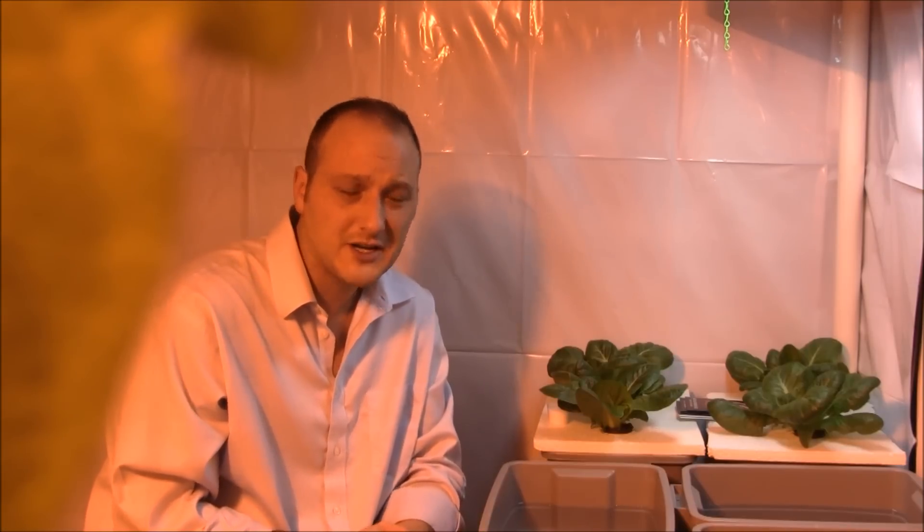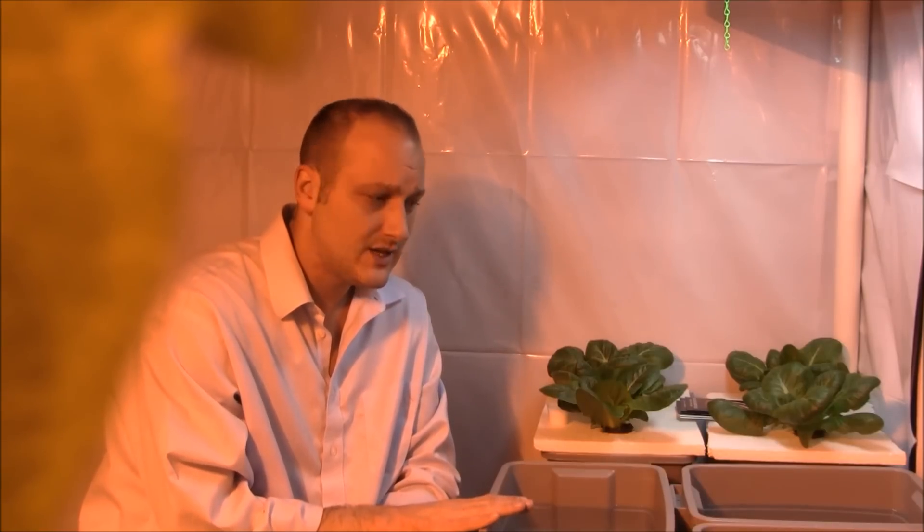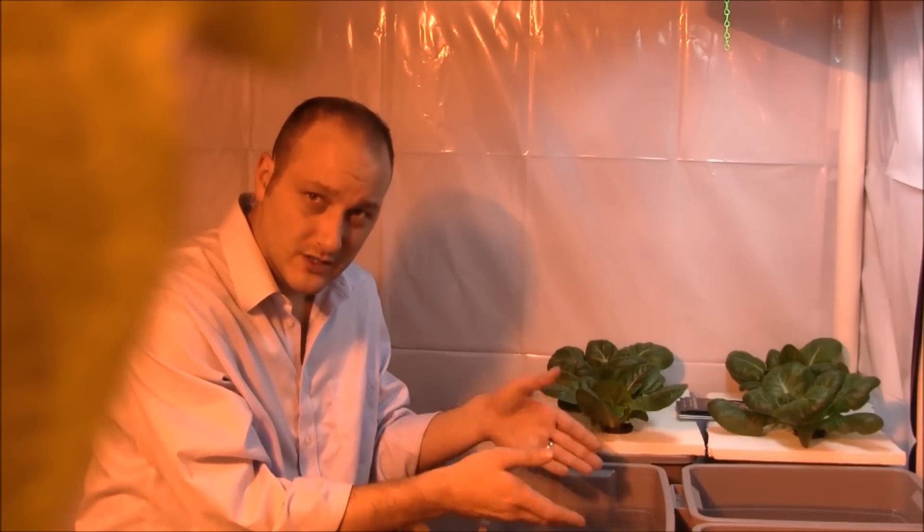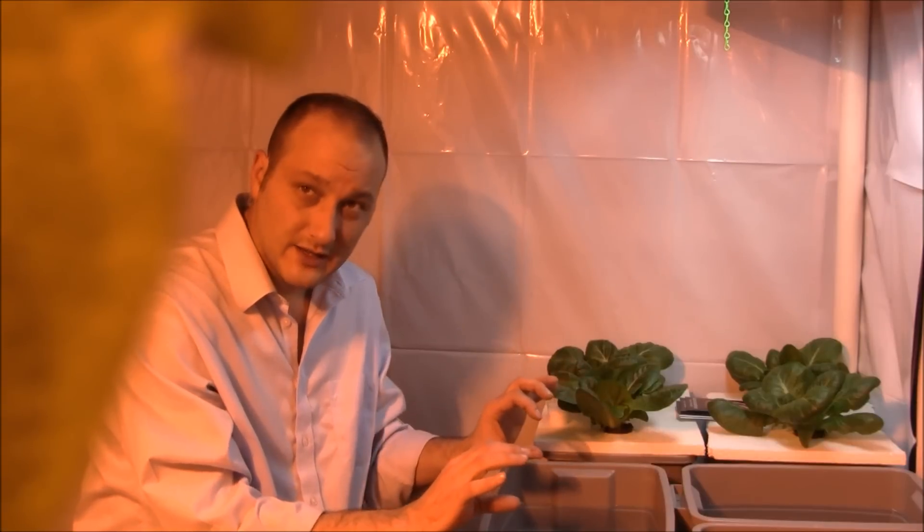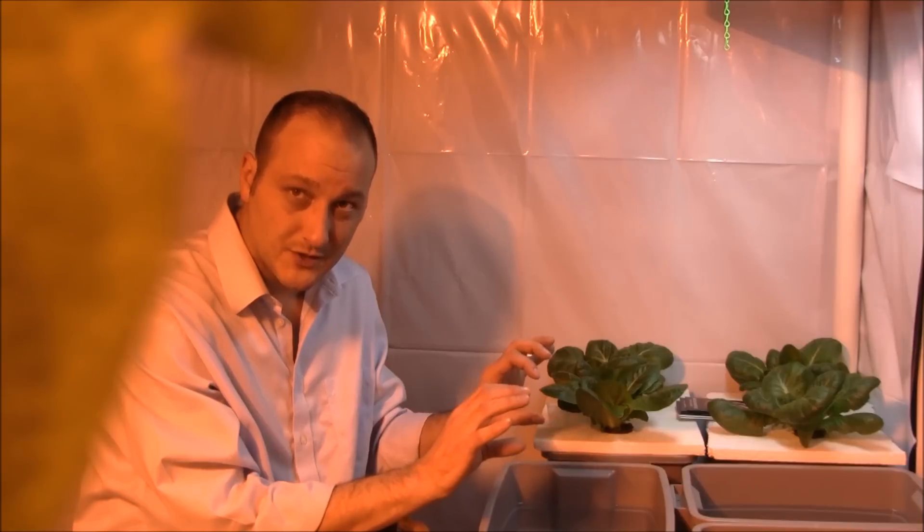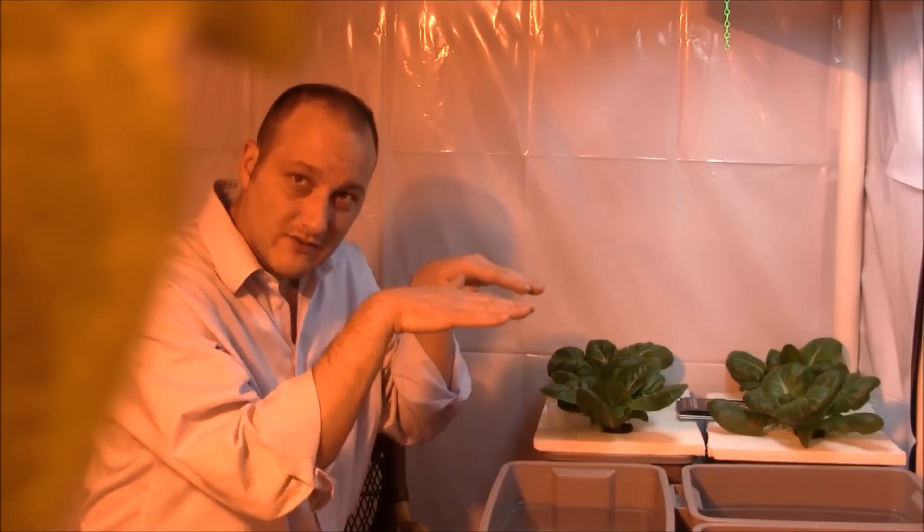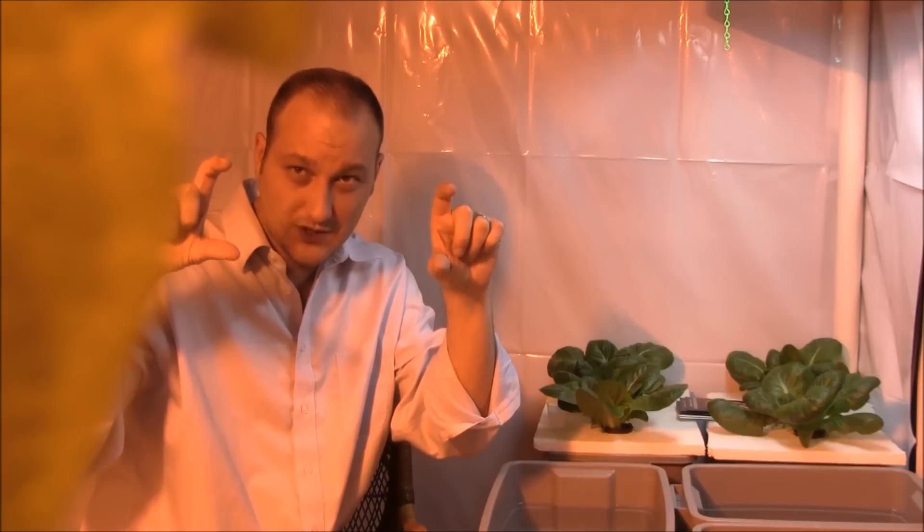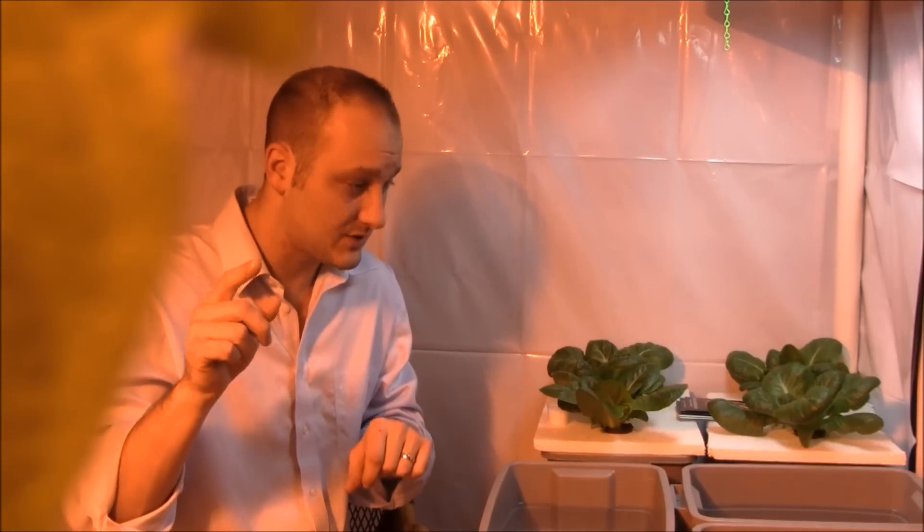The growing method will be Kratky style, which means no aeration, no pump—basically water, tote, nutrients, styrofoam on top, net cups. Let the roots grow down, absorb the water. Naturally, as the water is absorbed and the nutrients are eaten, the water levels will go down, which will leave an air gap in there for the roots. That's important, so don't fill these up. Make sure you have a big enough tote to cover an entire grow, about one gallon per head of lettuce.